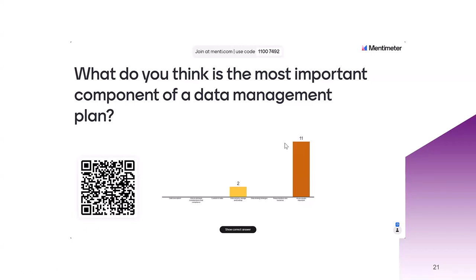Poll results: a couple of votes for data security, storage and backup, but quite a few votes for 'all are equally important.' Yes — all are equally important because we think of data in the research data life cycle. Data security, backup storage, data minimization, anonymization — they're all important. All components of a data management plan are just as important, including understanding ethical and legal considerations for our own data and ensuring we curate data with metadata and documentation available.